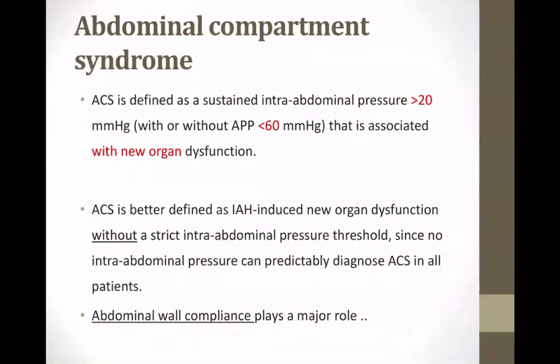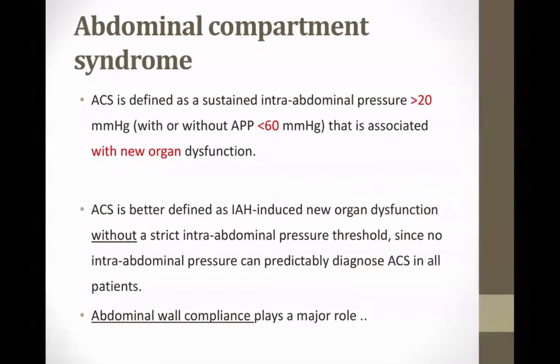What is abdominal compartment syndrome? It's a sustained elevation of intra-abdominal pressure more than 20 mmHg associated with new organ failure. However, that cutoff might be even lower in someone with poor abdominal compliance — this is not a strict threshold. Some patients could develop the syndrome with lower intra-abdominal pressure.